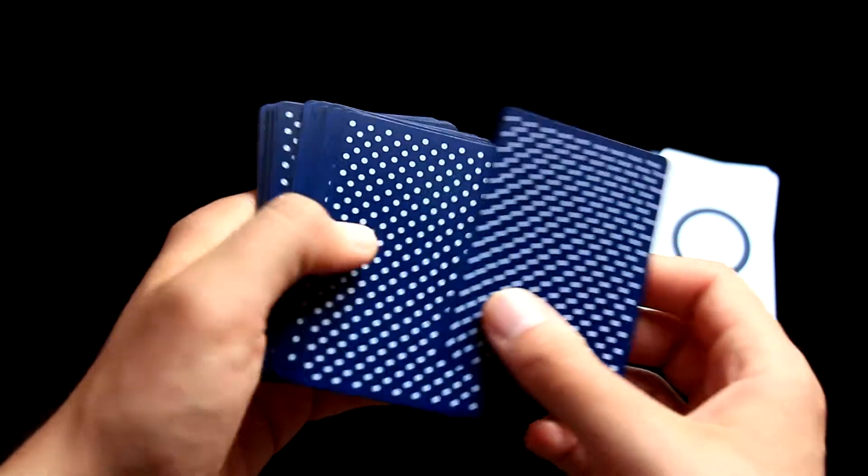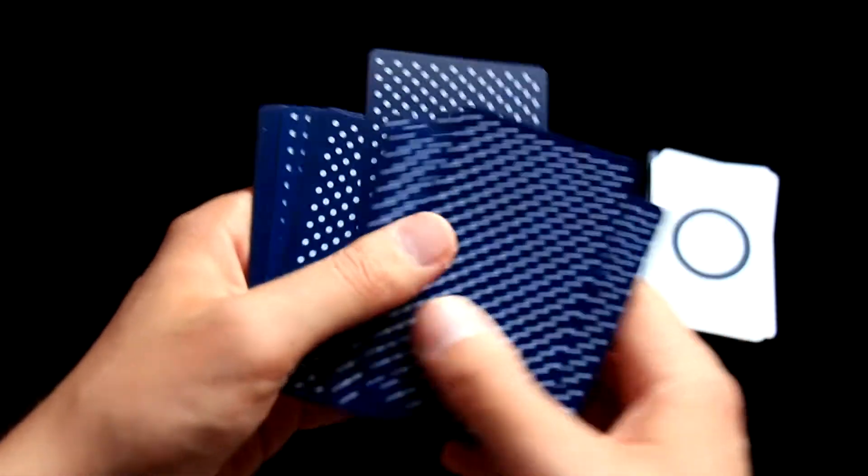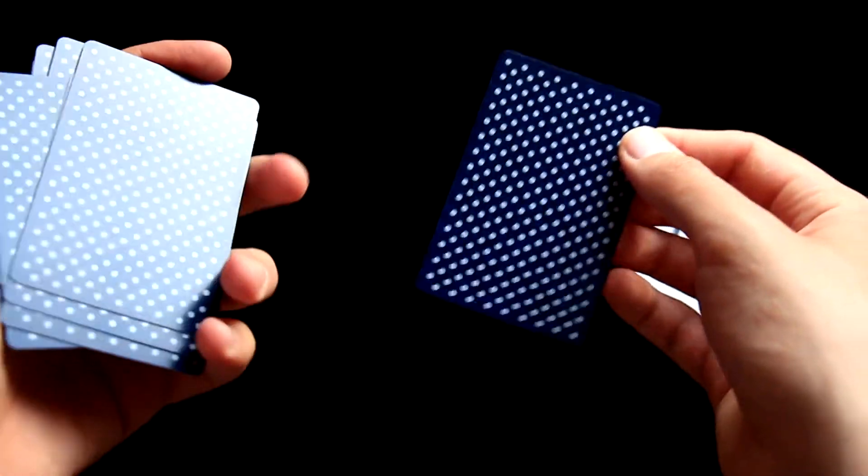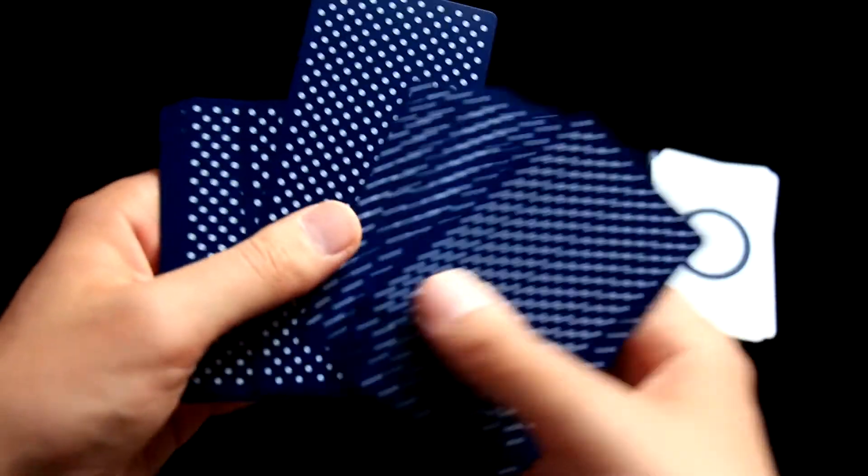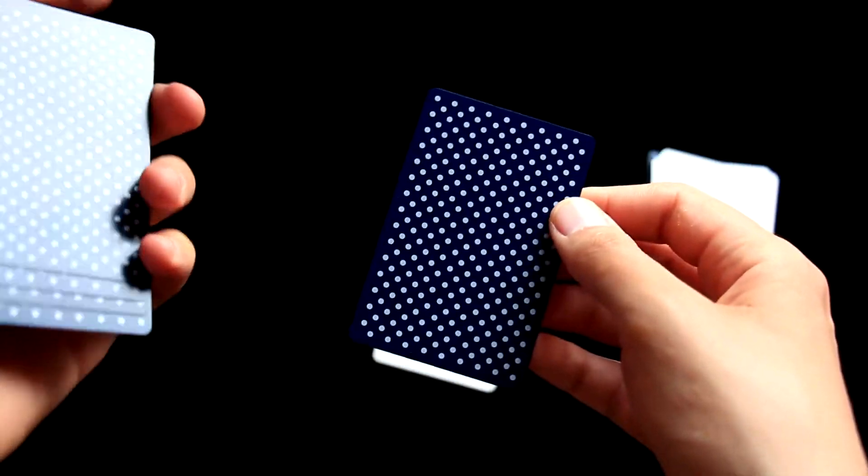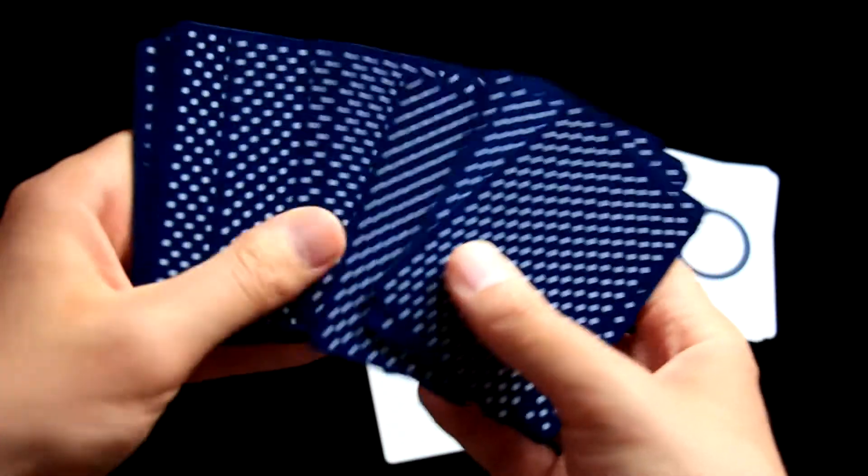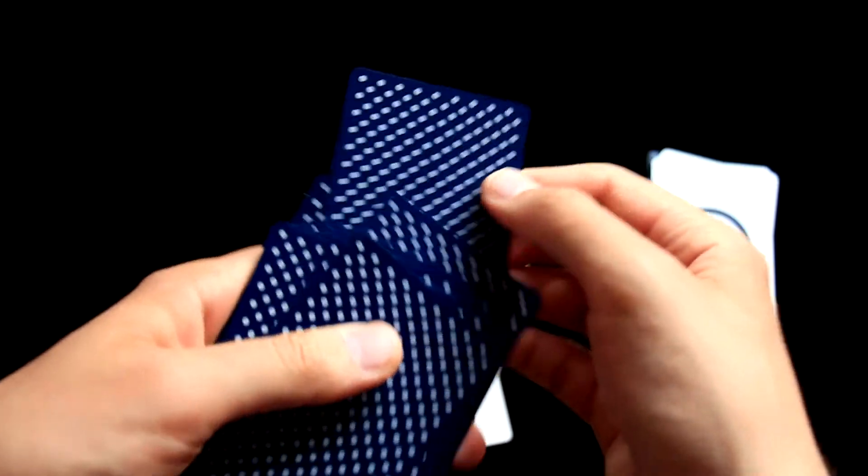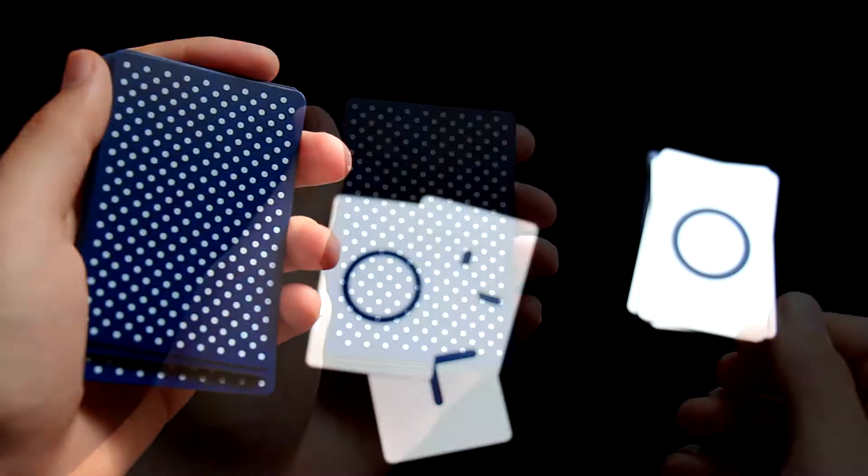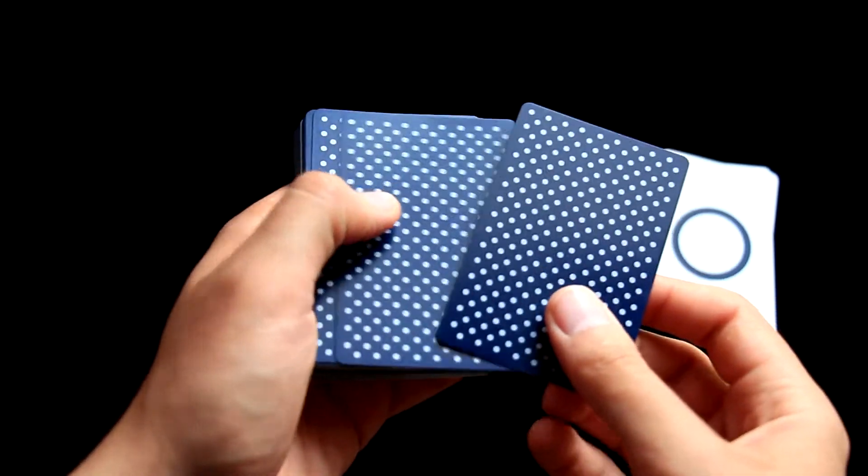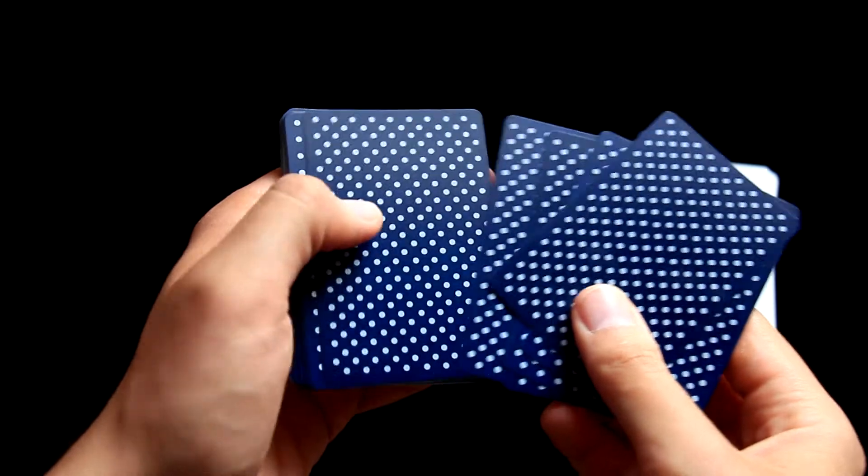This deck is also marked, so you should be able to recognize any card just from behind. So let's say this one over here, this one looks like a cross and it is. So something else, maybe this one, this looks like a circle and it is. I will not reveal the marking system. Maybe you are able to see it on camera anyway, but I would say it is very clever and very well hidden.